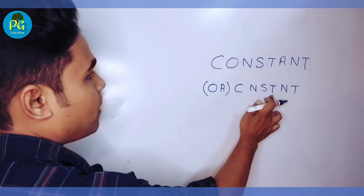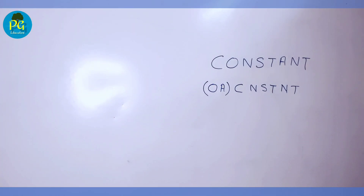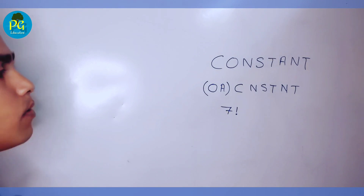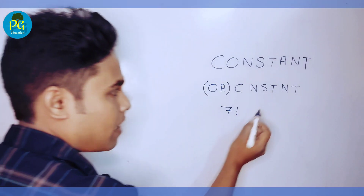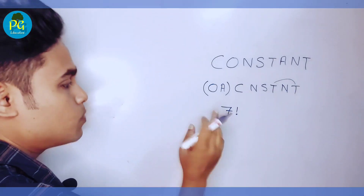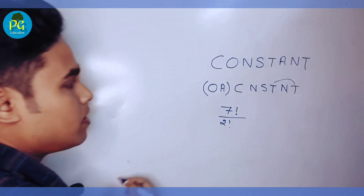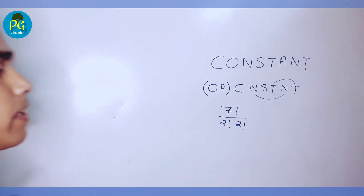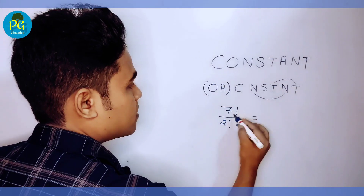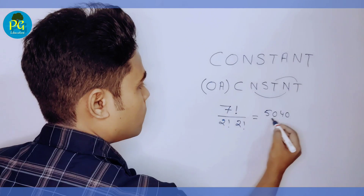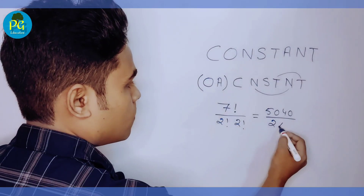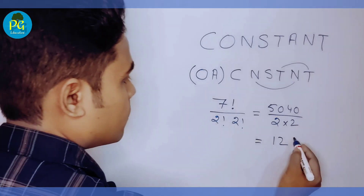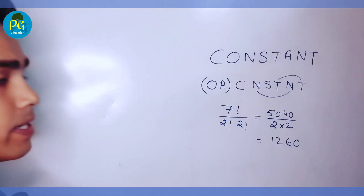So treating the two vowels as a single unit, we have 7 letters and arrange them in 7 factorial ways. But in the word, T is repeated twice — so divide by 2 factorial — and N is also repeated twice — so divide by another 2 factorial. This gives 7! ÷ (2! × 2!) = 5040 ÷ 4 = 1260.